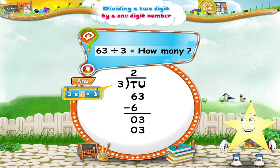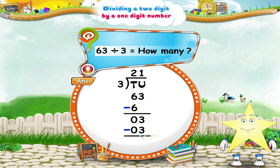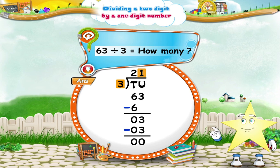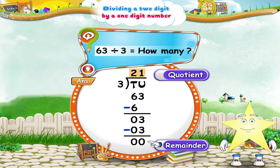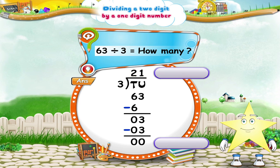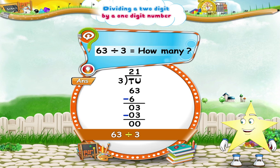Write the 1 above the line in the units place of the quotient. Subtract the product of 3 and 1 from the 3 units. The remainder is 0. The quotient is 21. So, 63 divided by 3 is 21.